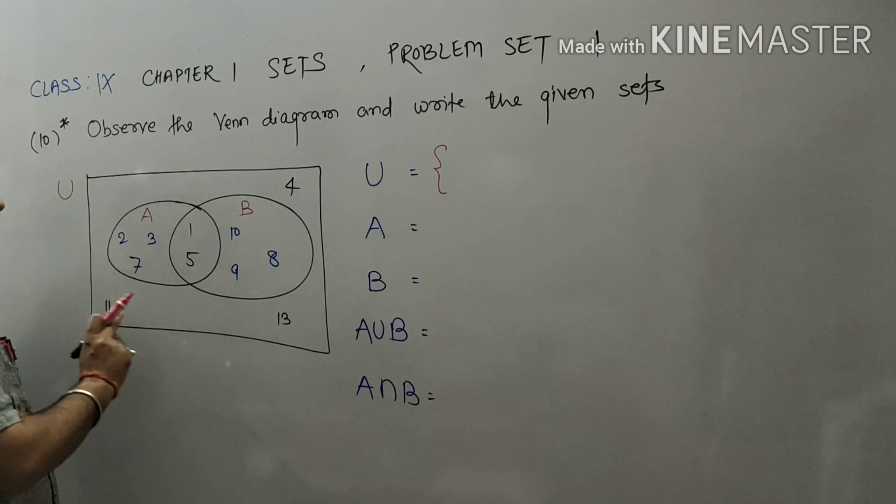Now students, in question number 10 we are going to find universal set, set A, set B, A union B, and A intersection B.